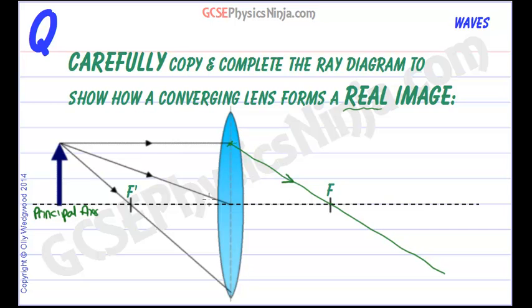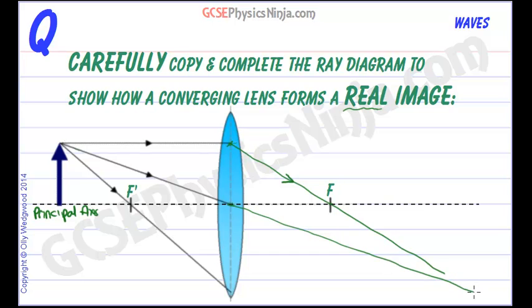What about this second ray? It's going straight through the optical centre of the lens. Now any ray that goes through the centre of the lens does not get refracted - it doesn't change direction. It just carries on in a straight line. So we'll start from there and we'll keep going. Always use a pencil and a ruler for this. So there is our straight-through ray.